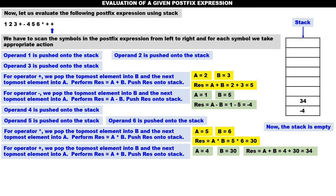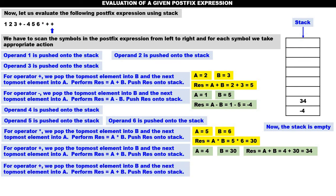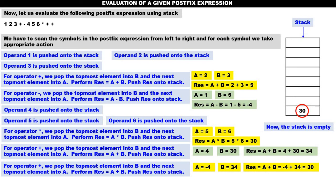Next symbol is plus — also an operator. For operator plus, pop the topmost element into B, next topmost element into A, perform RES = A + B, and push RES onto the stack. Topmost element is 34 — 34 is popped to B. Next topmost element is minus four — minus four is popped to A. RES: minus four plus 34 is 30. Now 30 is pushed onto the stack. All symbols are processed. After processing all symbols, there is only one element in the stack — that is the answer. In our example, it is 30.